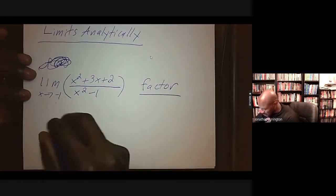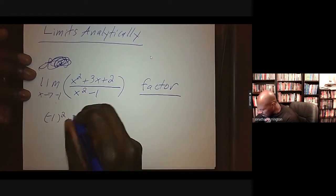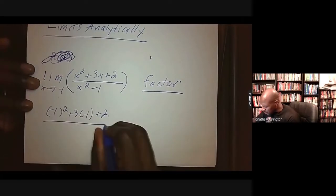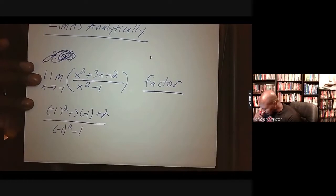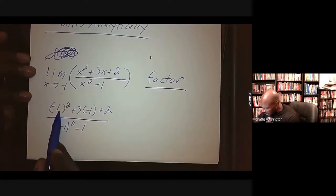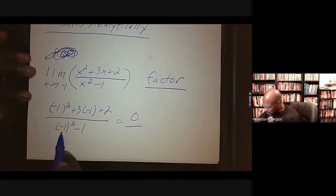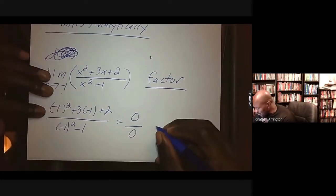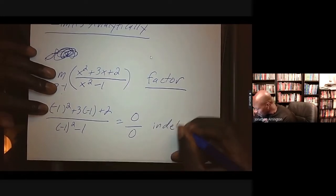So I'm going to plug in negative 1 for x and see what happens. This is negative 1 squared plus 3 times negative 1 plus 2 over negative 1 squared minus 1. So the numerator is positive 1 minus 3, that's negative 2, plus 2 — that's 0. The denominator is positive 1 minus 1 — that's 0. So I have 0 over 0, which is undefined.